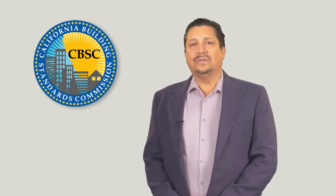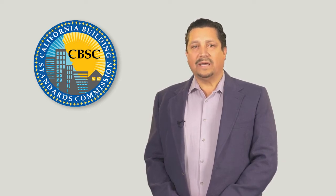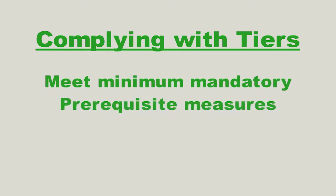Consult with your local building department to see if they require additional green building standards above and beyond the base Cal Green Code. Individual owners and developers can also choose to incorporate tier elements into their designs, even if not required by the local building department. Complying with an adopted tier requires that you first meet the minimum mandatory Cal Green provisions, and then for each tier, there are prerequisite measures which must be incorporated into the design. Finally, in addition to the prerequisites, a certain number of elective measures need to be selected within each division.